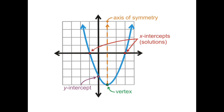For example, we have our axis of symmetry. Our axis of symmetry is this line right here — we can call it the imaginary line that cuts the parabola in half. This line only touches your quadratic function, your parabola, in one point that we call the vertex.